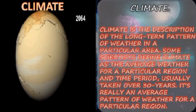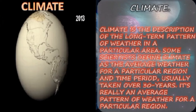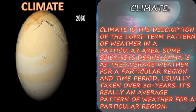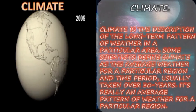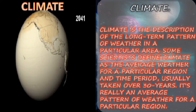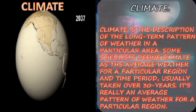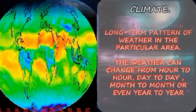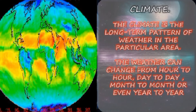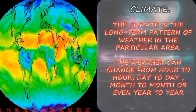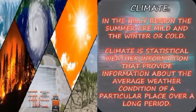Climate is a description of the long-term pattern of weather in a particular area. Scientists define climate as the average weather for a particular region and time, usually taken over 30 years. Weather can change from hour to hour, day to day, month to month, or year to year. Climate is the statistical information that provides the average weather condition of a particular place over a long period. Climate is not the same everywhere—it varies from place to place and from time to time. In a country, some places are cold and some are very hot. The most important element of climate is temperature.